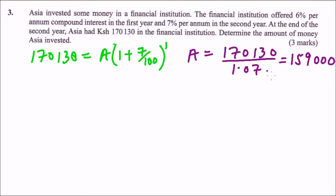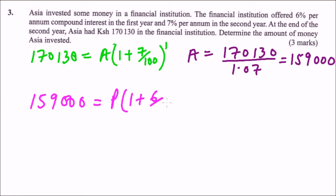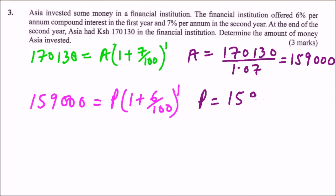This 159,000 is the amount at the end of the first year. That means, in the first year, 159,000 equals the principal — the amount of money invested — multiplied by (1 + 6/100) to the power of 1. To get our P, we divide 159,000 by 1.06, so P is equal to 150,000.